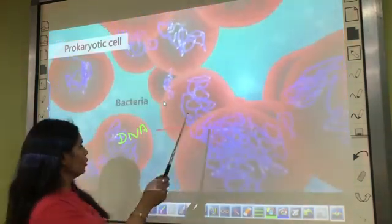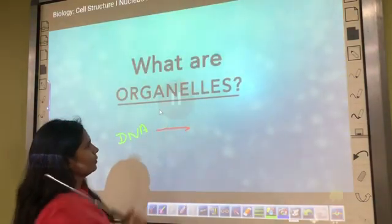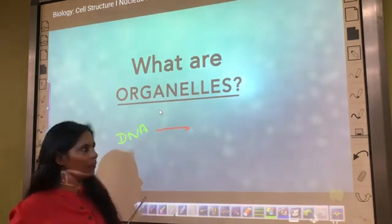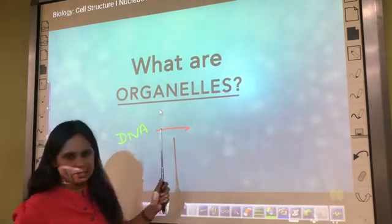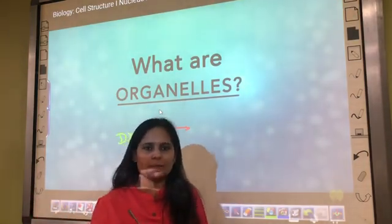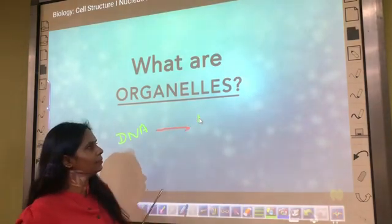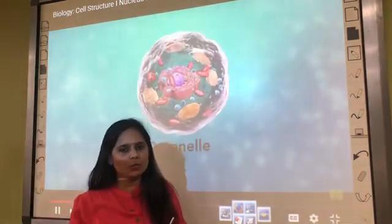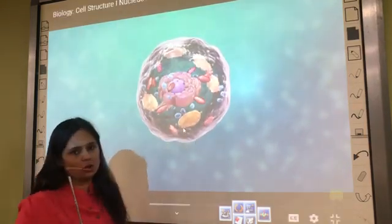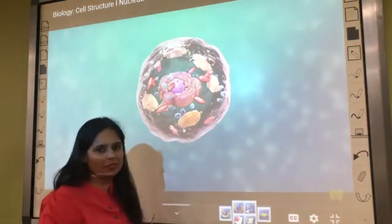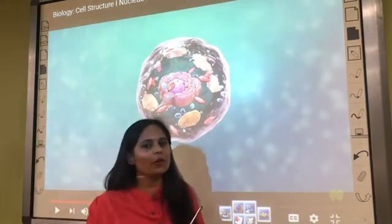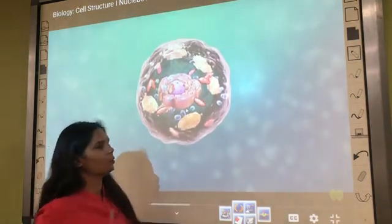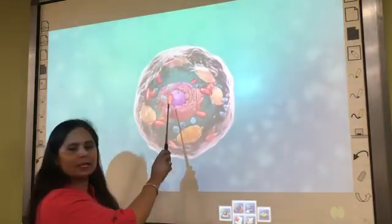Now let's talk about organelles. We are having organs, animals are having organs, and cells are having organelles. Organelles are the small little units present in a cell. In the complicated cells there are different organelles: mitochondria, which is called the powerhouse of the cell; the endoplasmic reticulum, which surrounds the nucleus; and the most important one is the nucleus, which carries our genetic material.